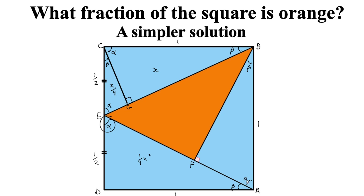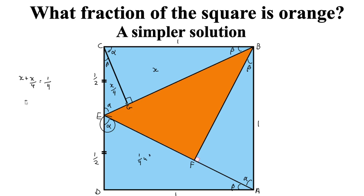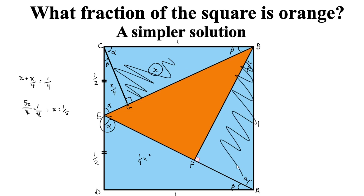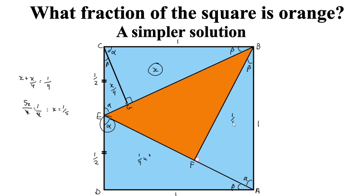All we need to do now is add together the areas of both sub-triangles, because we already know the area of triangle BCE combined. So X plus X over 4 equals one quarter. That gives us 5X over 4 equals one quarter, and solving, X equals one fifth. This triangle CBG has area one fifth, and it is also congruent to triangle BFA — they have the same angles and equal hypotenuses — so the area of triangle BFA is also one fifth square units.